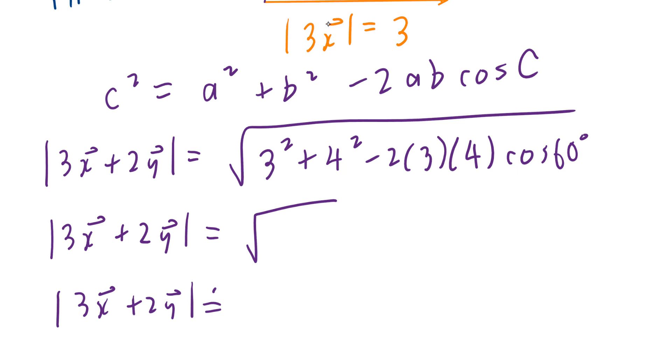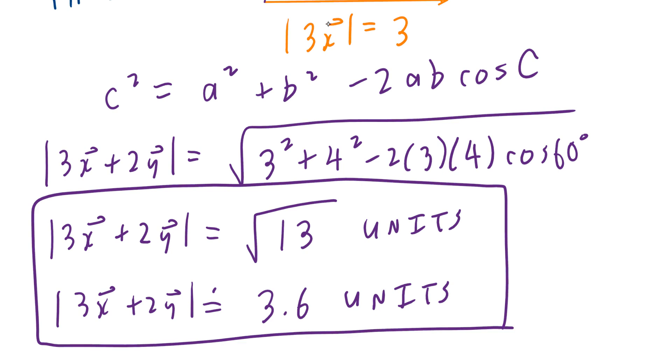3 squared plus 4 squared minus 2 times 3 times 4 times cosine of 60 degrees. That's going to be exactly the square root of 13 units. Or, if you round this to one decimal place, it's approximately 3.6 units. So that is the answer for the first part.